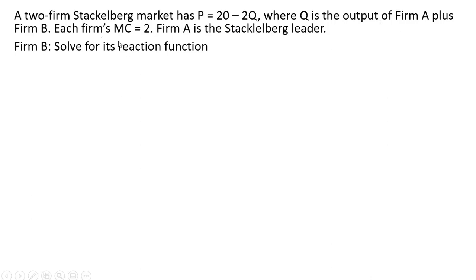Each firm's marginal cost is constant at $2. Firm A is the Stackelberg leader setting its output first. Let's start by solving firm B's reaction function.